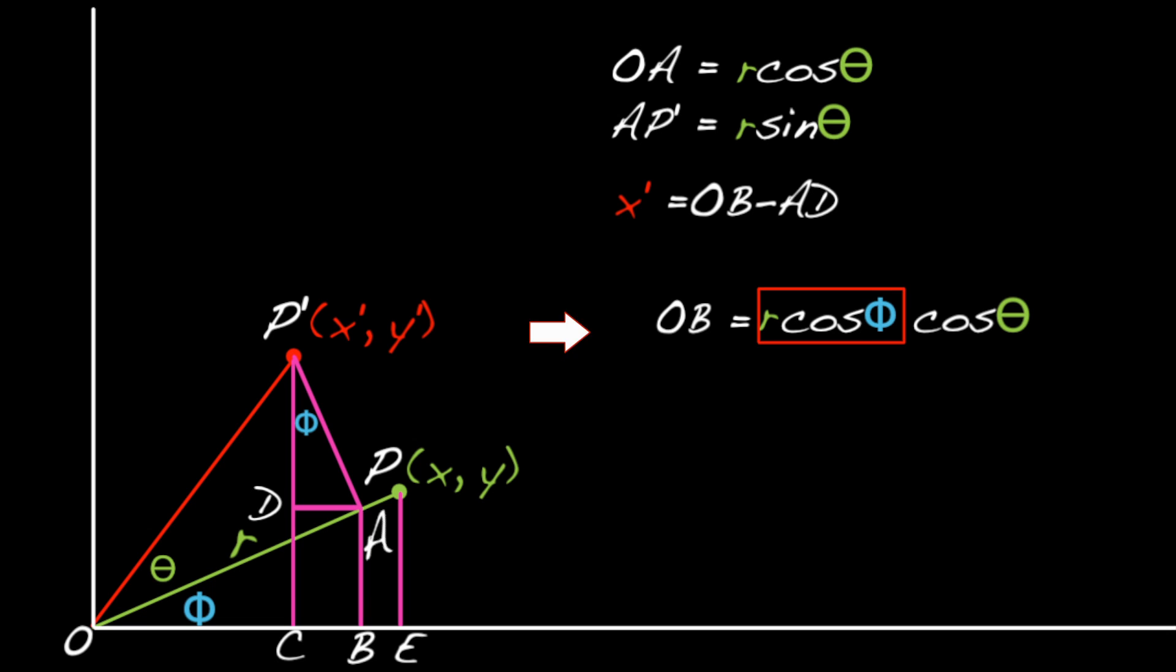But we know that R cosine phi is just X. So, OB equals X cosine theta. Now, what's AD?